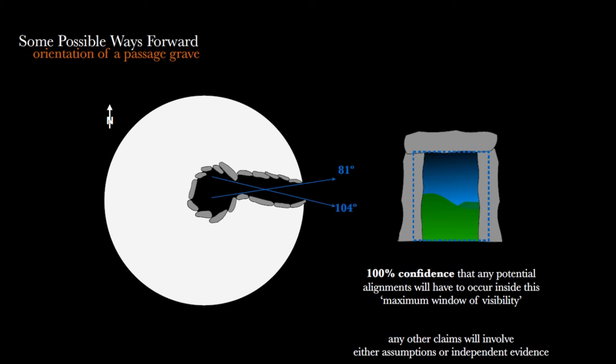At the time I thought this is much more powerful because you can actually say with 100% confidence—I'm talking about the statistical meaning of confidence—that any potential alignment has to occur inside this range. Now, whether it's going to happen in the middle of the range or further left or right, or matching a peak on the horizon or a notch—claiming those things involves assumptions or independent evidence. In the absence of those things, this is a much better tool.